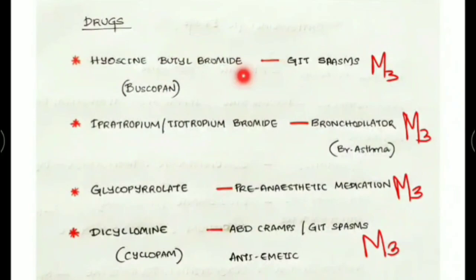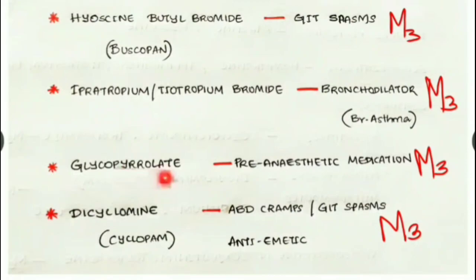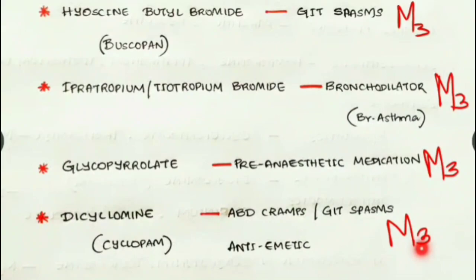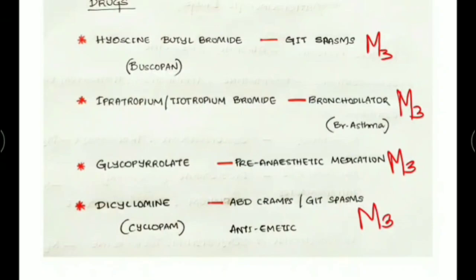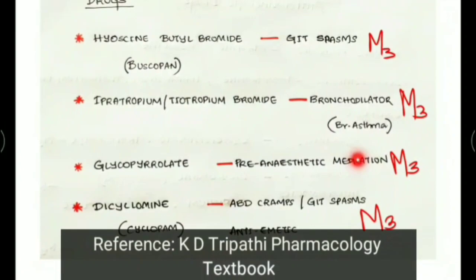Other anticholinergic drugs: hyoscine butylbromide, by inhibiting M3 receptors, is used to treat GIT spasms. Ipratropium bromide and tiotropium bromide cause bronchodilation and are used in bronchial asthma and COPD. Glycopyrrolate is used as a pre-anesthetic medication. Dicycloverine, by inhibitory action at M3, is used for abdominal cramps, GIT spasms, and as an anti-emetic. These drugs act opposite to acetylcholine and its derivatives.